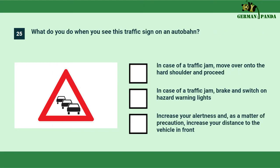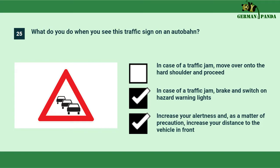What do you do when you see this traffic sign on an autobahn? In case of a traffic jam, brake and switch on hazard warning lights. Increase your alertness and, as a matter of precaution, increase your distance to the vehicle in front.